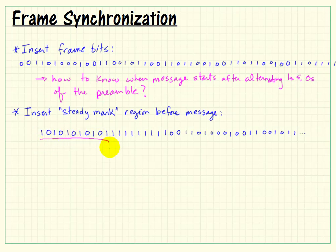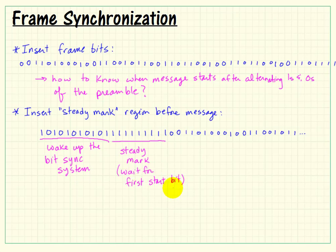The nice thing here is the alternating ones and zeros wake up the bitsync system. The long string of mark symbols means that now we can figure out when, or we can easily detect, the first time that we see a zero—that's going to be the start bit.